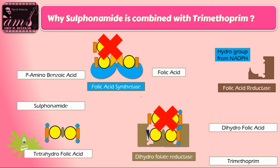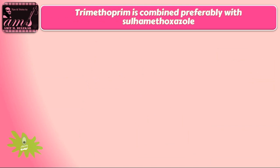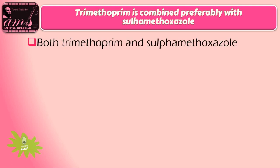Next, we have to discuss why trimethoprim is combined preferably with sulfamethoxazole from the class of sulfonamides. There are several sulfonamides available, but out of those, trimethoprim is combined preferably with sulfamethoxazole. There are some reasons for this. Both trimethoprim and sulfamethoxazole are well absorbed from the gastrointestinal tract, which is one of the important reasons behind this combination.